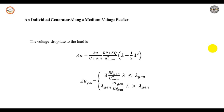Lambda equal to 0 corresponds to the beginning of the feeder, and Lambda equal to 1 corresponds to the end of the feeder. The voltage drop due to load is given by: Delta U divided by U-norm equals (RP + XQ) divided by U-squared-norm, multiplied by (delta minus half delta-squared). The voltage rise due to the generator is linear with distance along the feeder up to the generator location, and constant beyond the generator location.